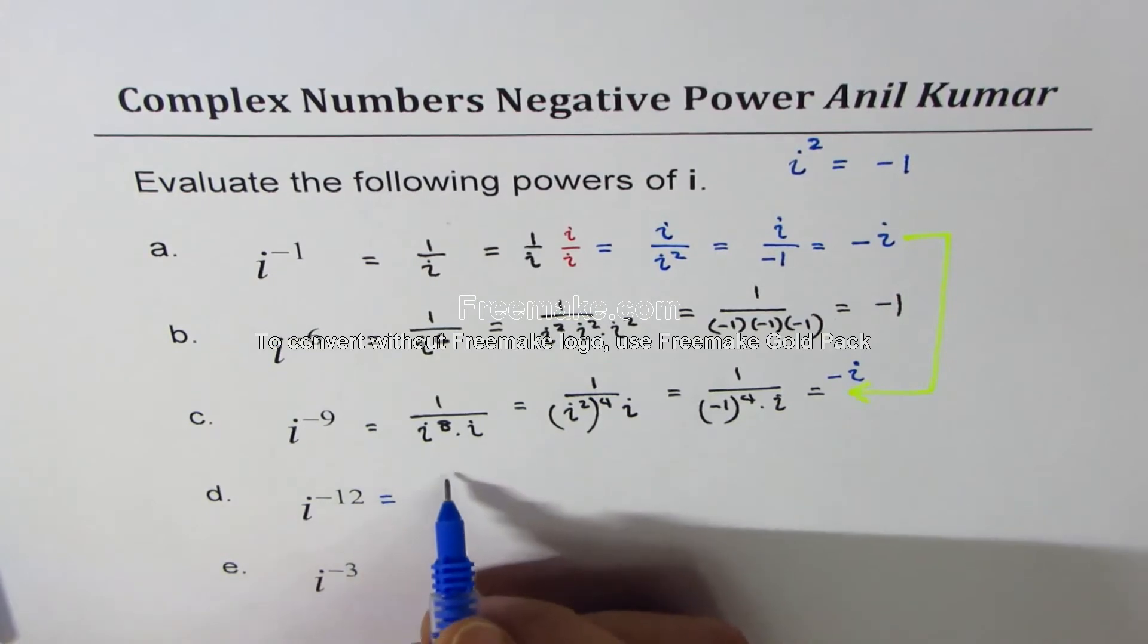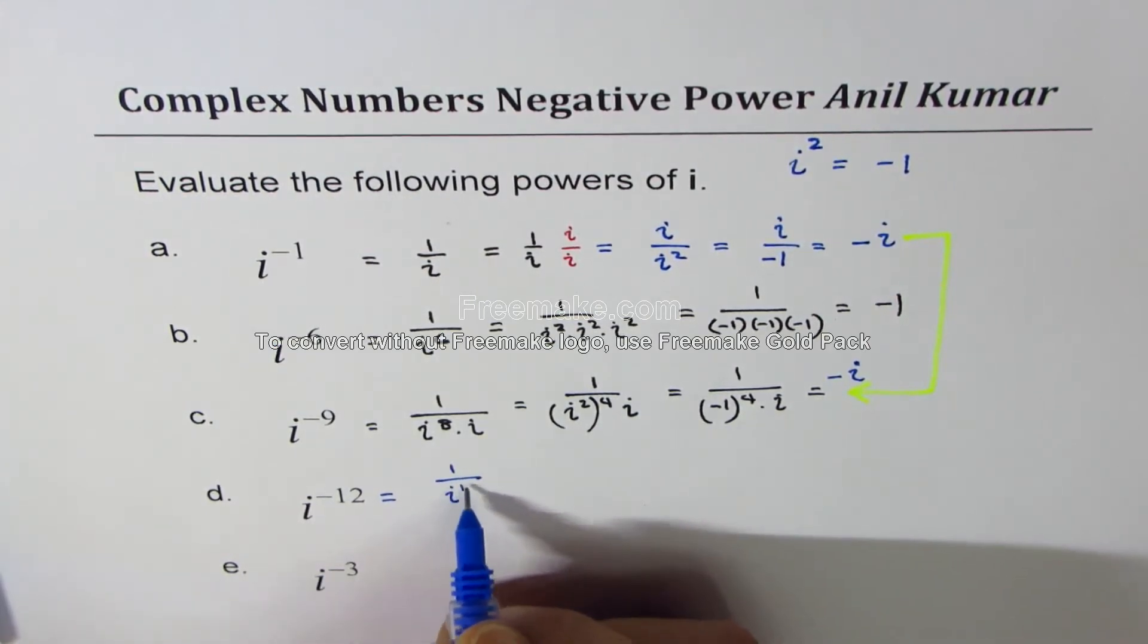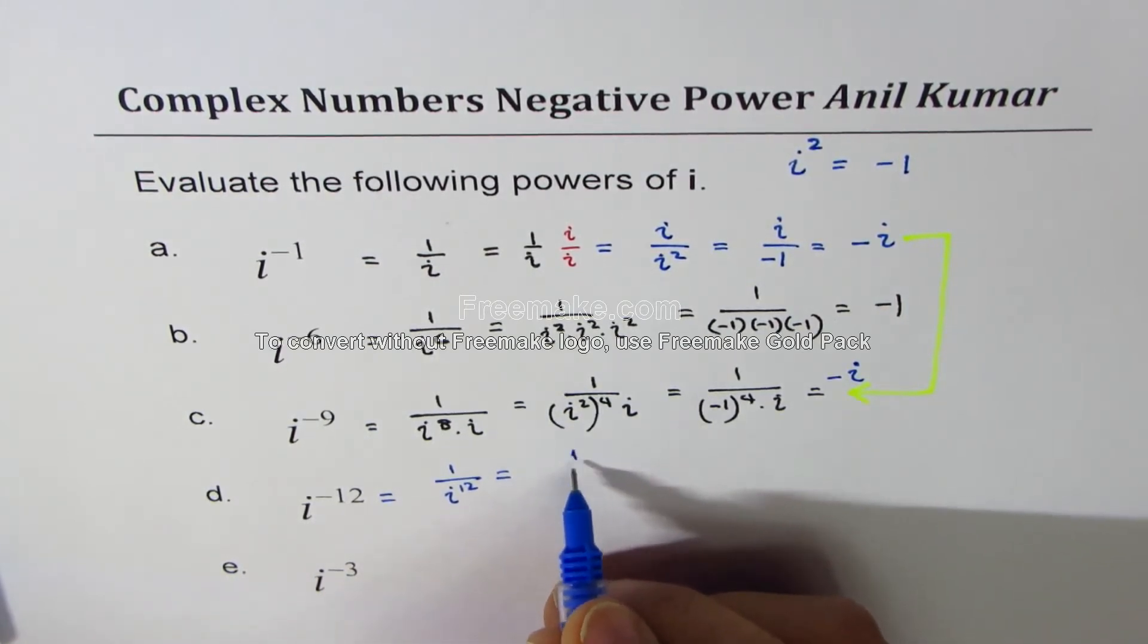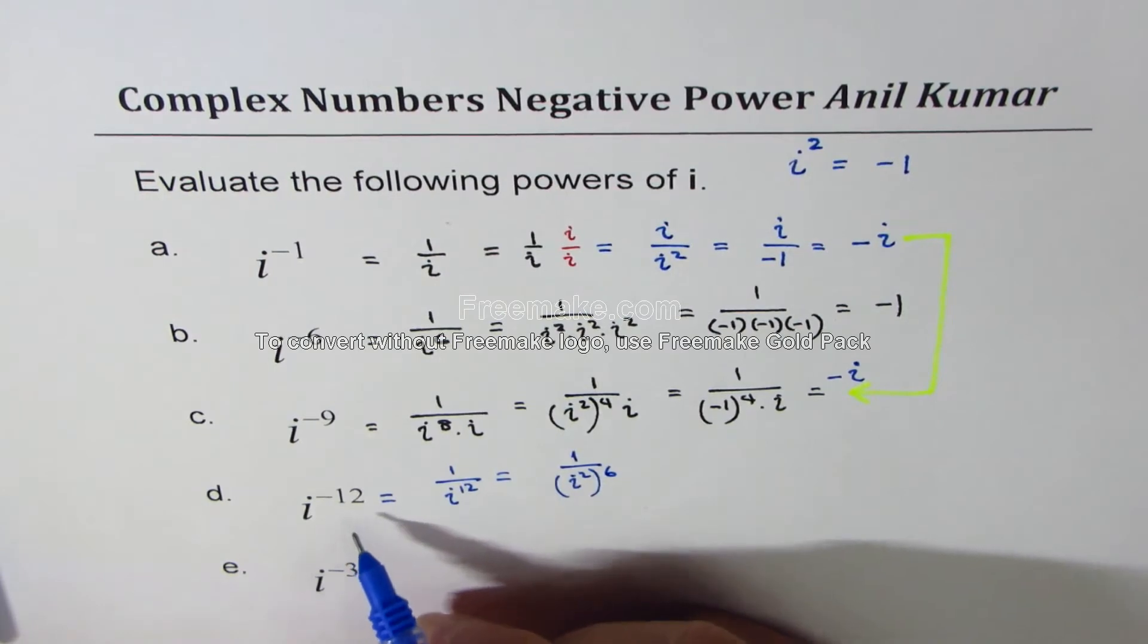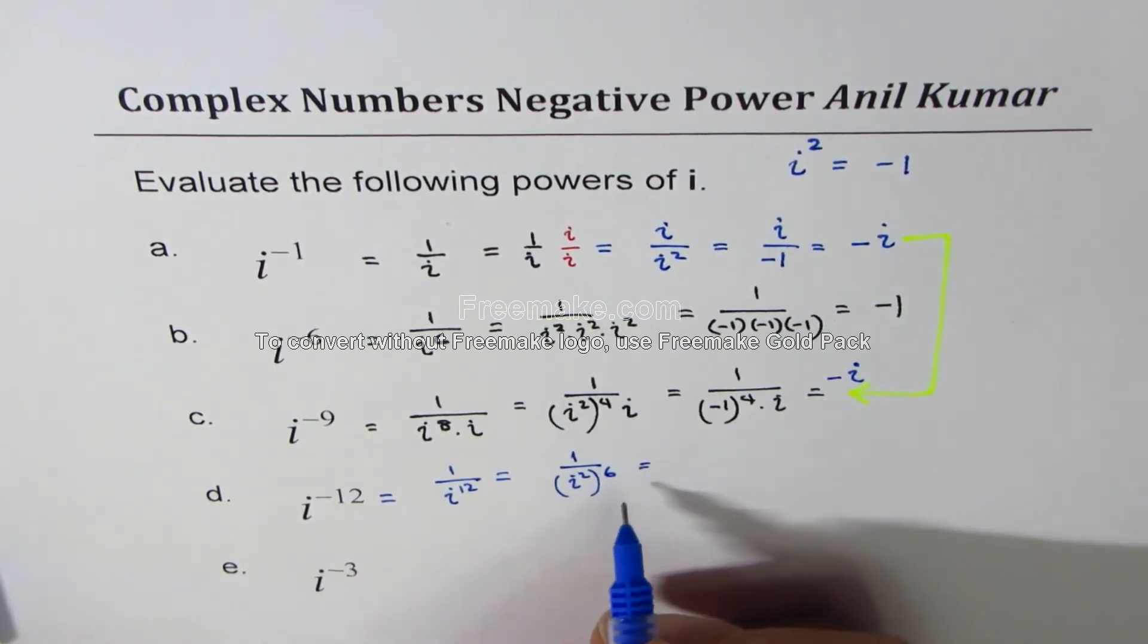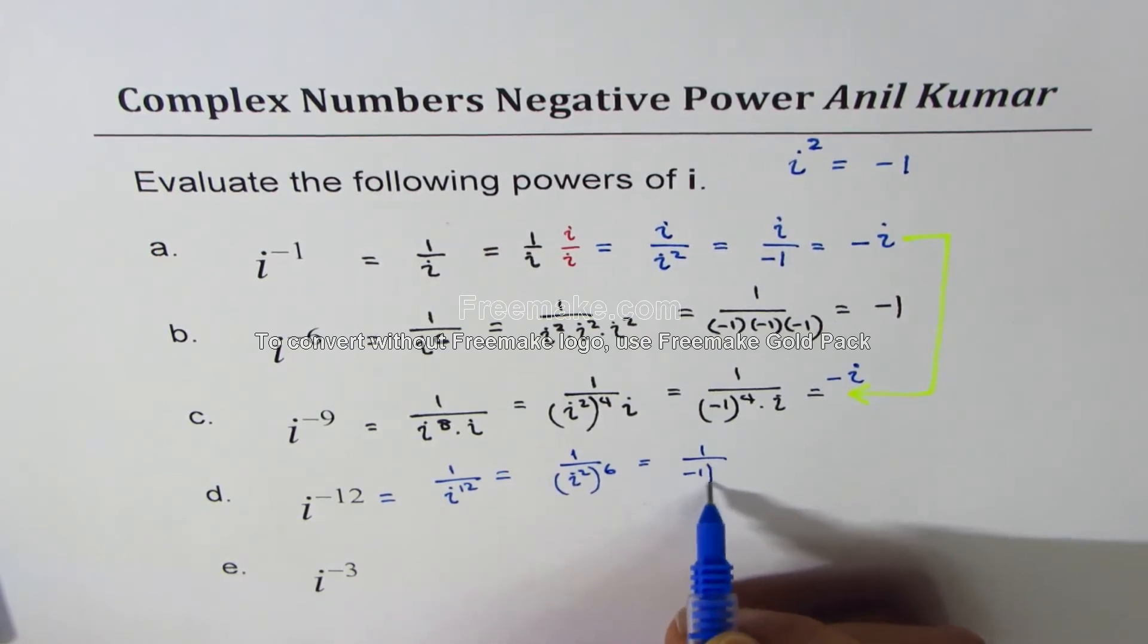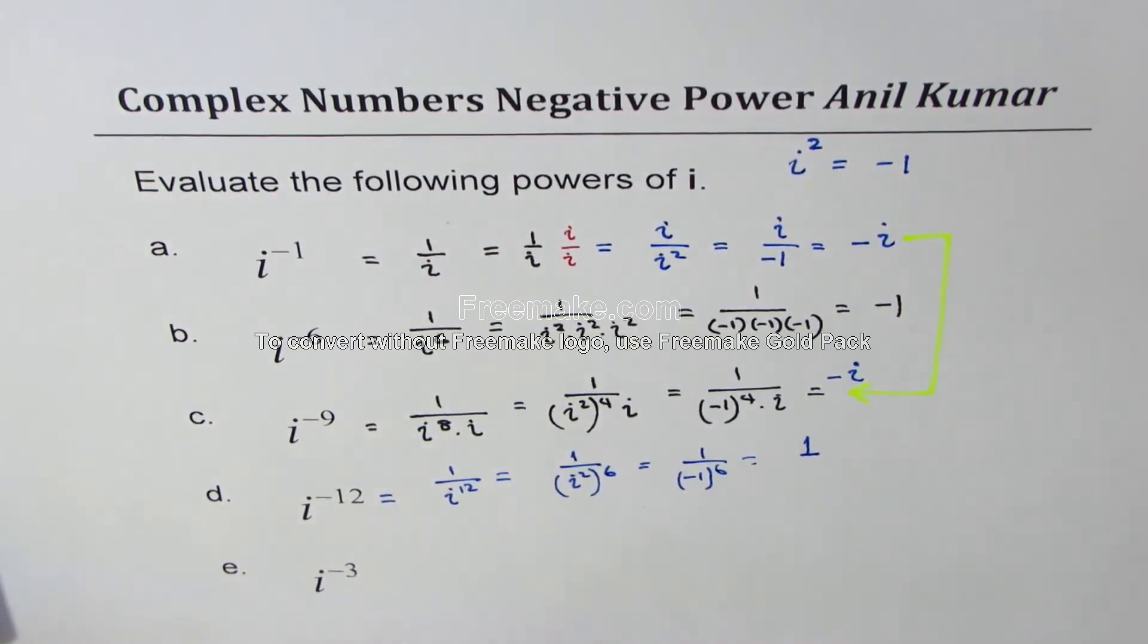i to the power of minus 12 is 1 over i to the power of 12, which could be written as 1 over i square to an even power of 6. So 12 is a multiple of 4. And what we get here is 1 over minus 1 to the power of 6, which is an even power. So we get 1 as a result.